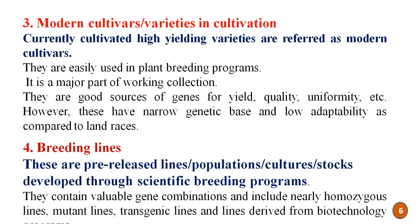The third type is modern cultivars or varieties in cultivation. These are the currently cultivated high-yielding varieties. They are easily used in plant breeding programs and form a major part of the working collection. They are a good source of genes for yield, quality, and uniformity. However, they have a narrow genetic base and low adaptability compared to landraces, which have a broad genetic base and wider adaptability.